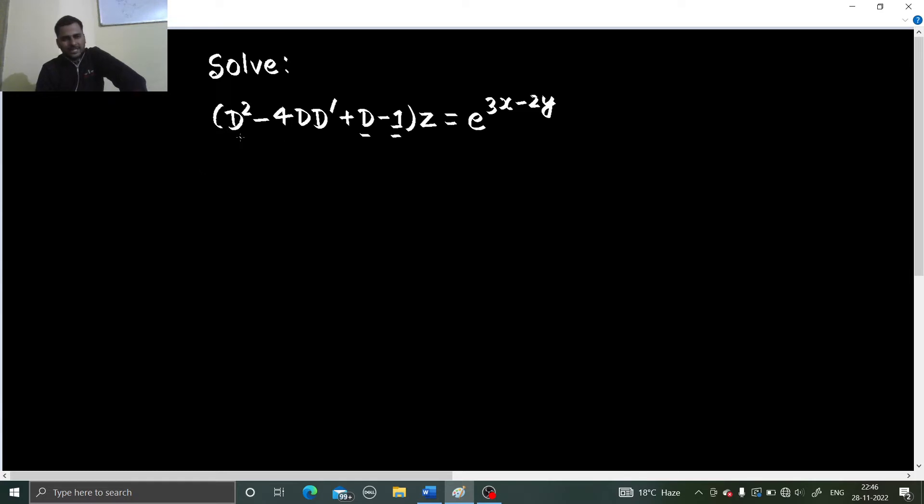Also as you can see this is not factorizable because if you take d common you get d minus 4d dash but what about the other one? So in case it is not factorizable how to find our complementary function? Neither it is of the form d minus md dash minus a so that we can compare.